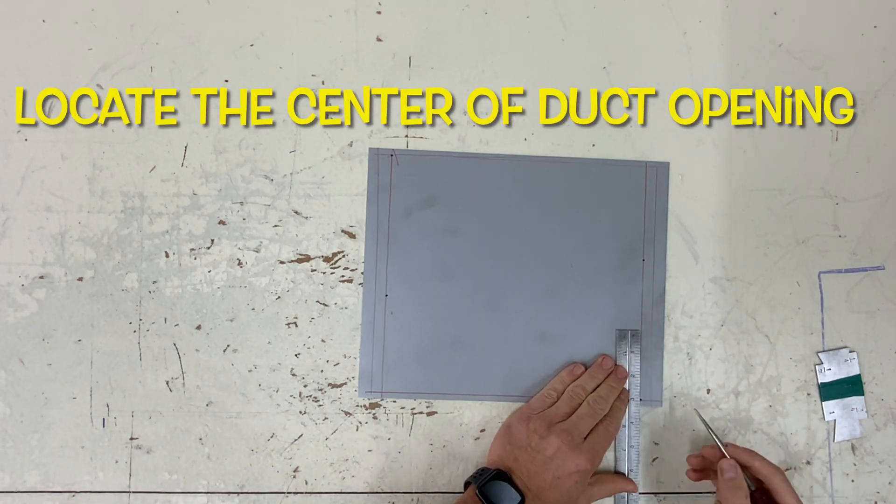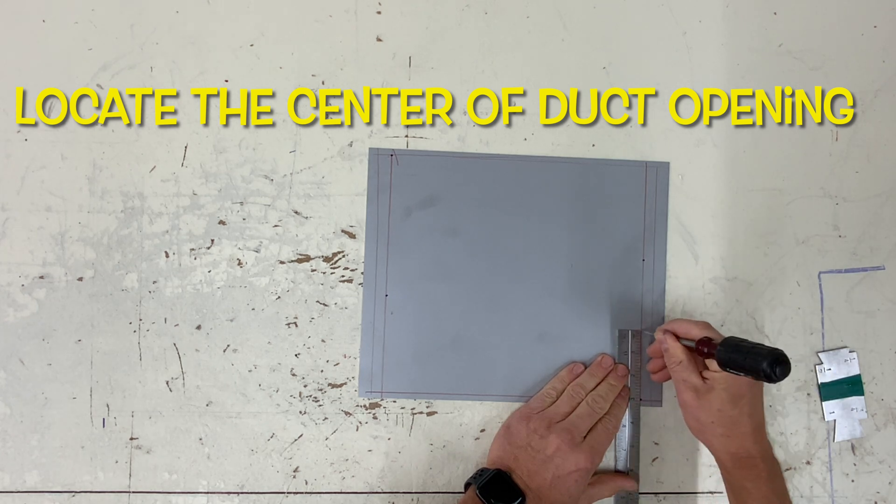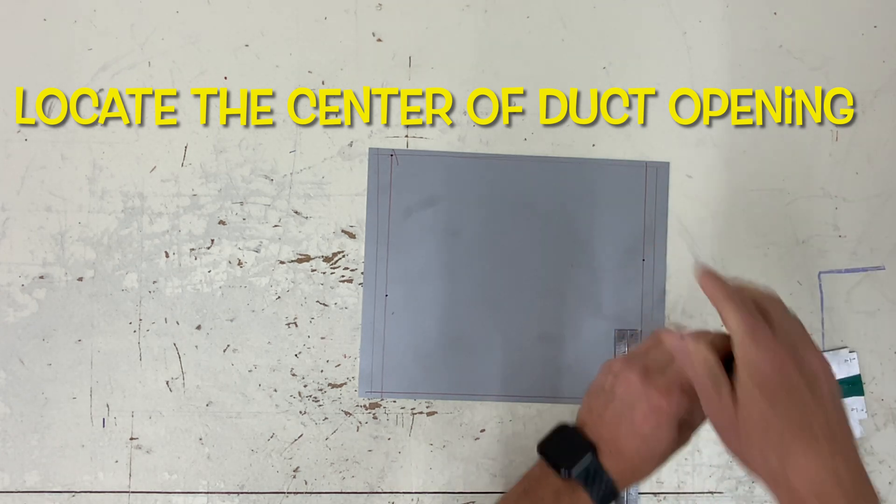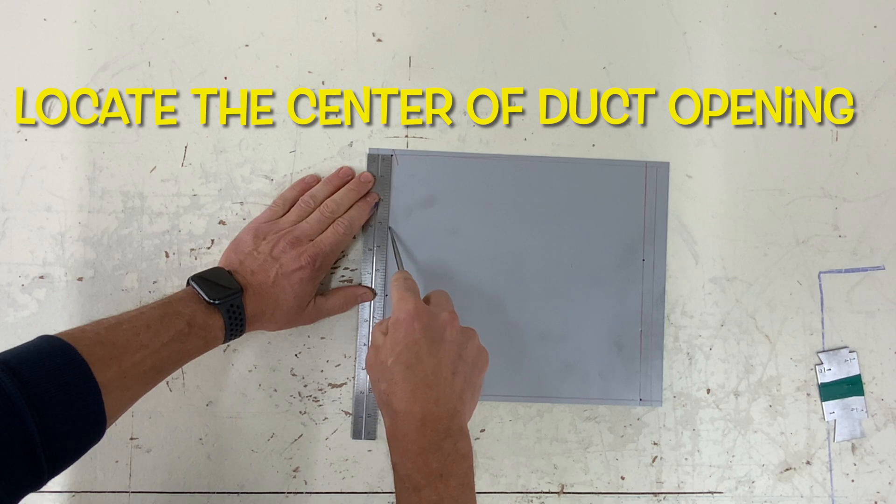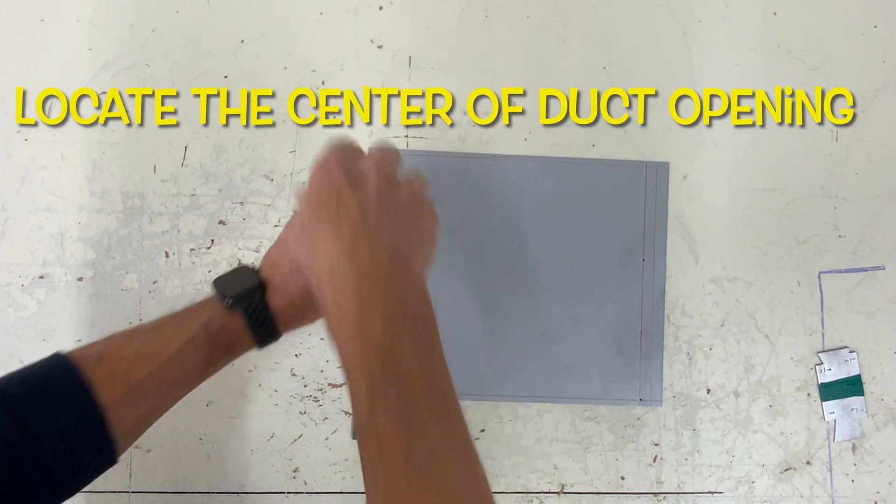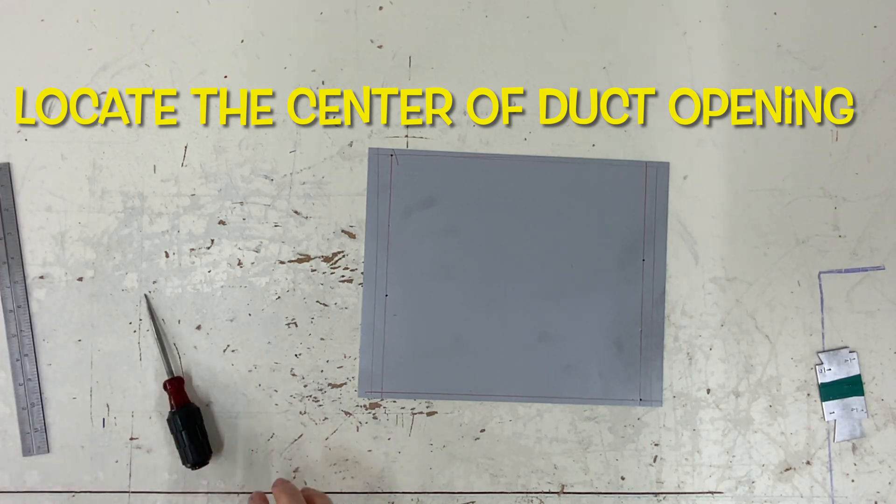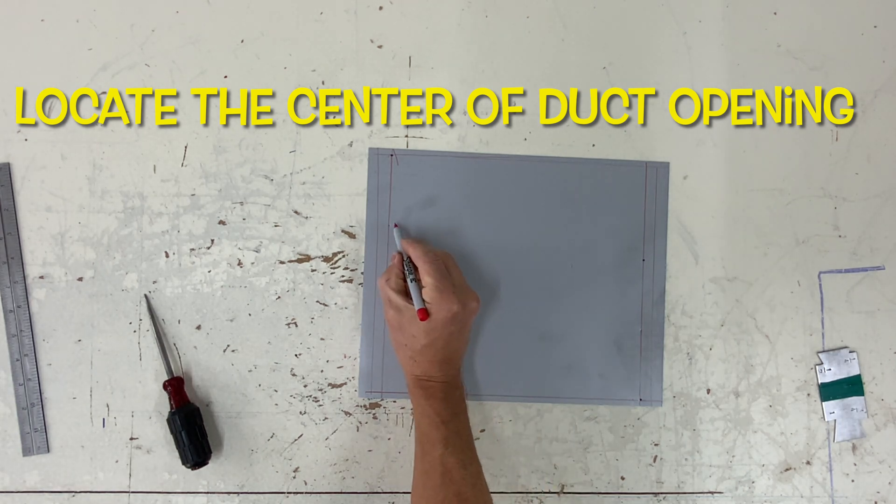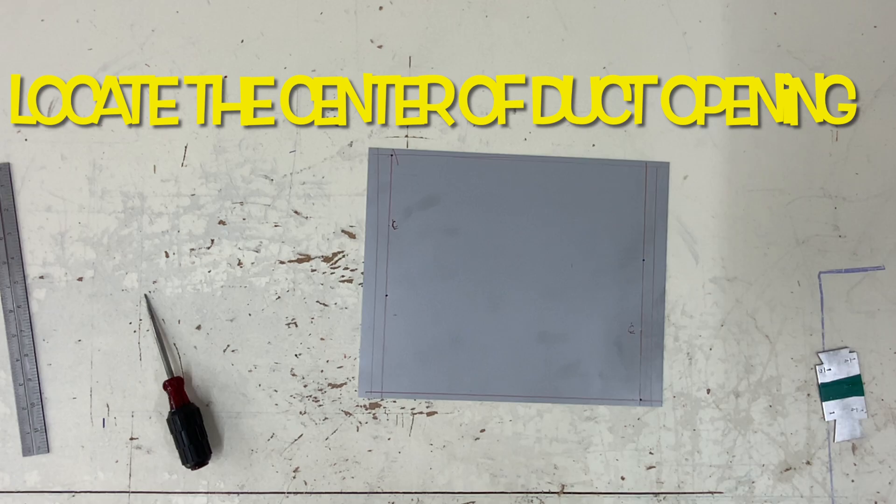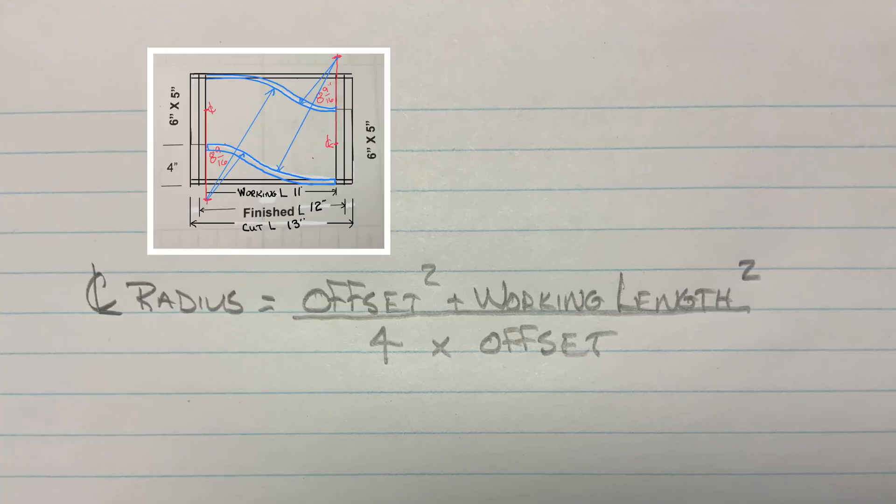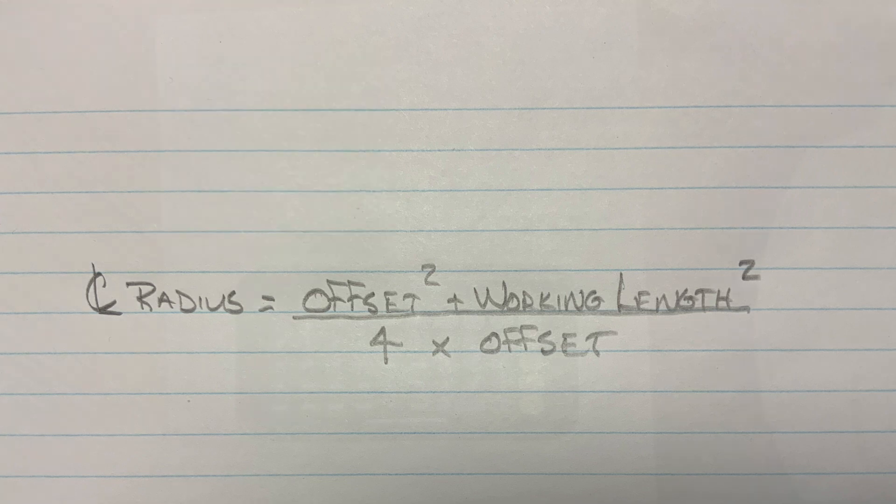So now I'm simply finding the center of the six, on both ends or both openings. Here I've just marked or identified these as center line. So here's the radius formula. Offset squared plus working length squared divided by four times the offset. This is a formula that's going to draw your arcs.